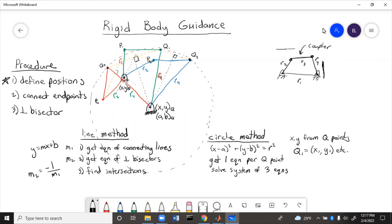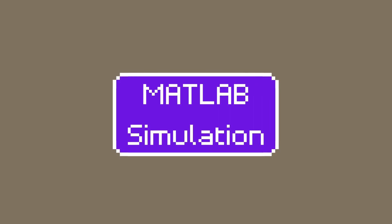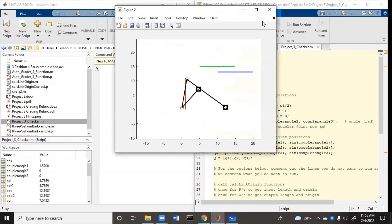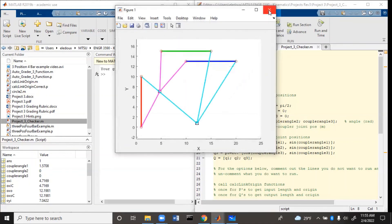So the line method or the circle method will both result in the same answer for the origin of the ground points in the length of the connecting link. Now let's look at a MATLAB simulation of this. So if we run the program, you can see first position red, second position green, third position blue. And then we can see all the positions right here where all of the pink lines intersect from the left endpoints and where all of the blue lines intersect from the right endpoints.